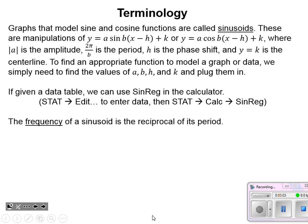When looking at a graph or data points and trying to come up with a sinusoidal function, we just need to find the values of a, b, h, and k and plug them into the appropriate function. Whether to choose sine or cosine — you can get away with either — but knowing that cosine starts at a maximum, like a water droplet graph, can make our work easier. We want to choose the function that will be easiest to work with.